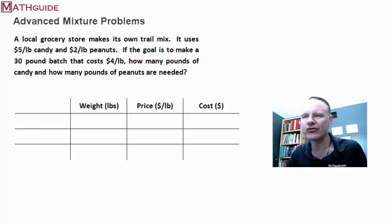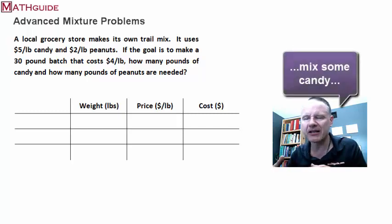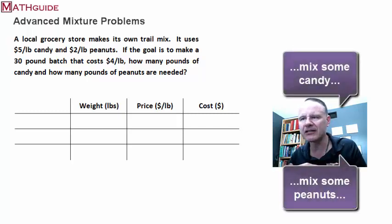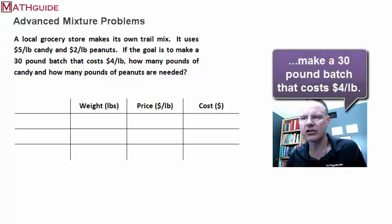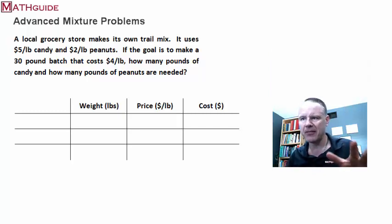I've got a local grocery store wants to make its own trail mix. So what is it going to do? It's going to mix some candy, it's going to mix some peanuts, it's going to create this mix, which is going to be tasty. So the goal is to make a 30 pound batch that costs $4 per pound. Okay, so that's what they want to produce. Maybe they've done some studies and they realize $4 per pound is a good price for trail mix. People snap it up at that price.